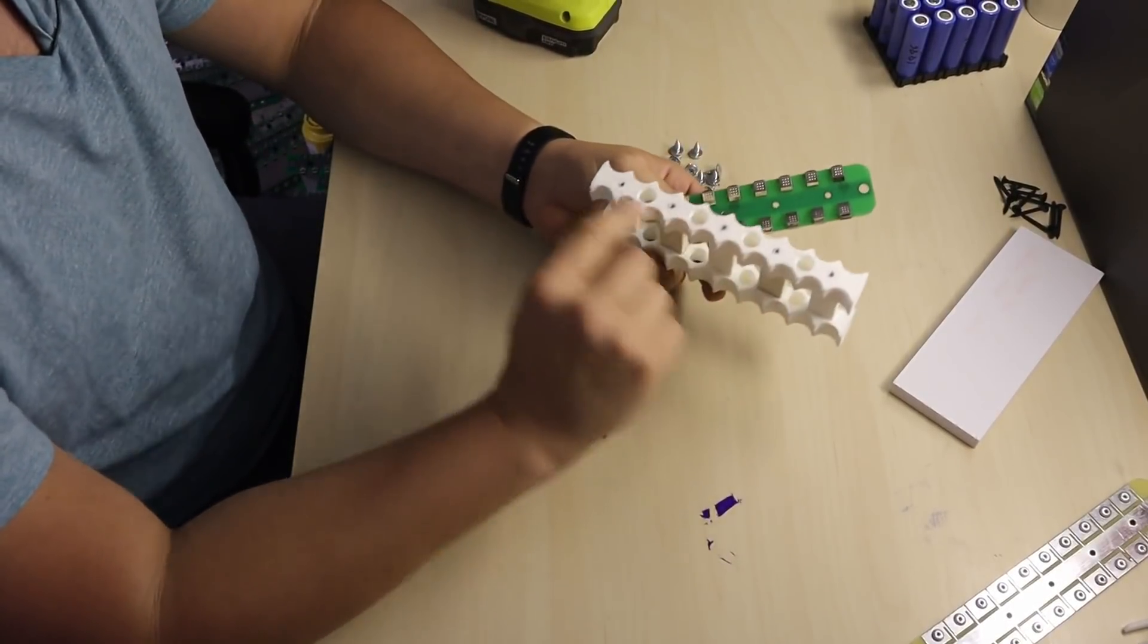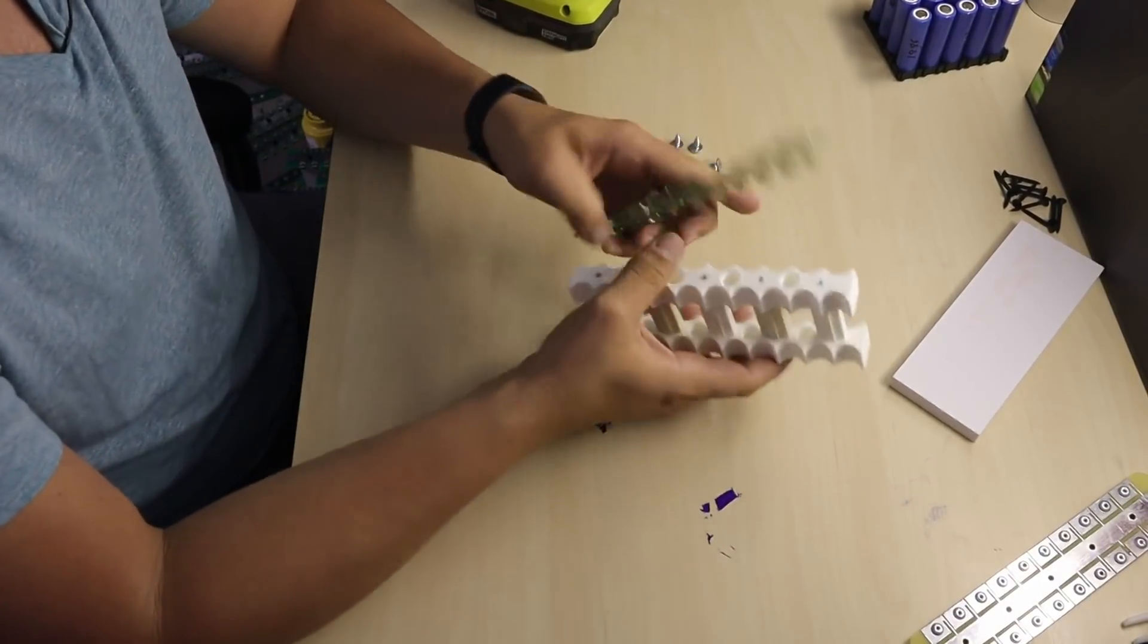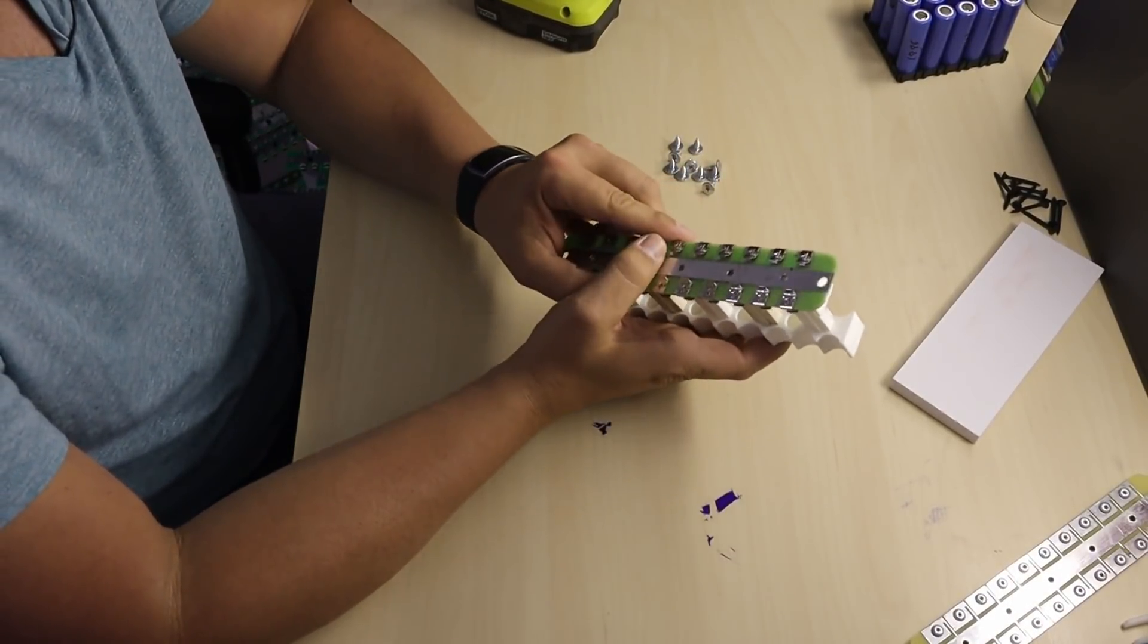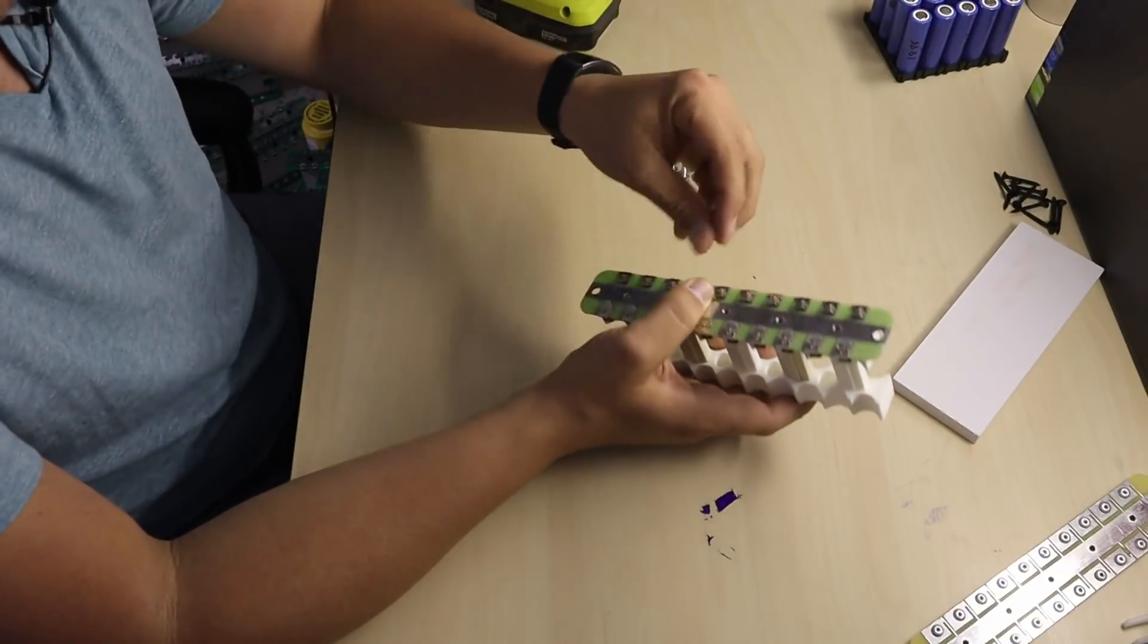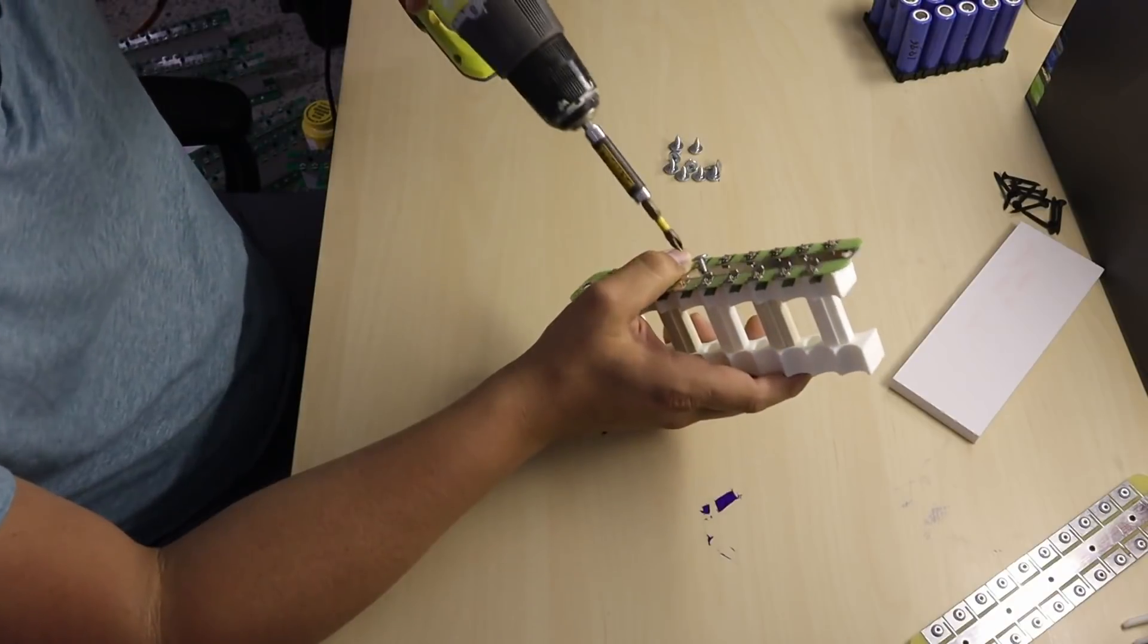They come with pre-installed or pre-drilled holes. All you have to do is just place your PCB there. That's it, start assembly.